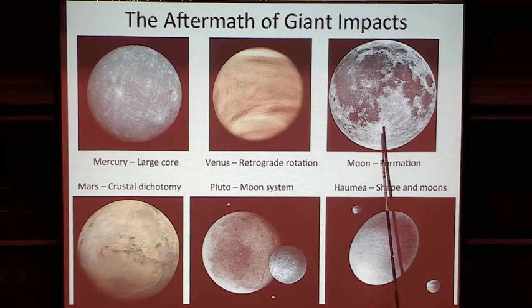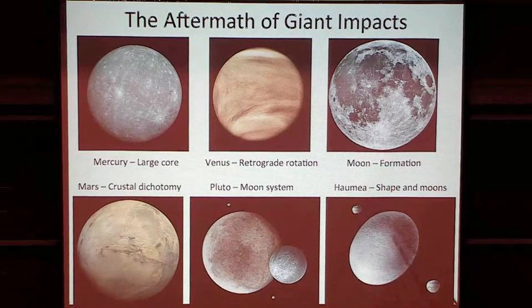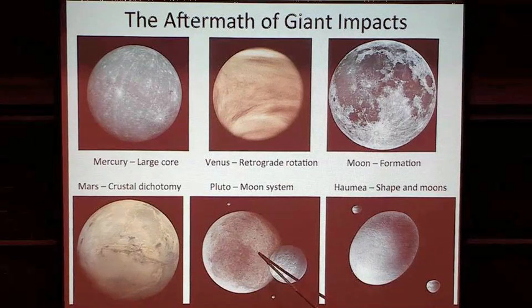The moon is 1.2% Earth mass. Mercury is about 0.055 Earth mass. Mars is a tenth of Earth mass. Pluto is about 10^-3 Earth masses, and Haumea is a little bit smaller. There are planets out there a little bigger than Pluto.